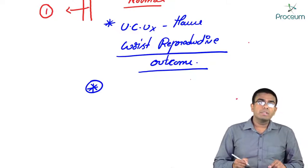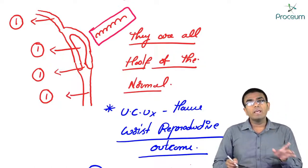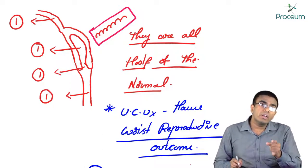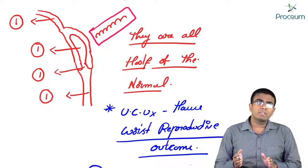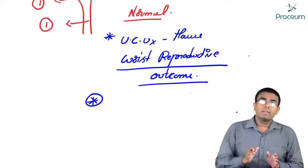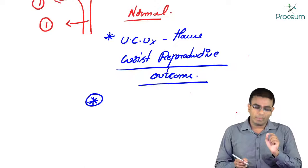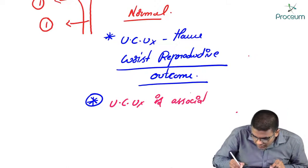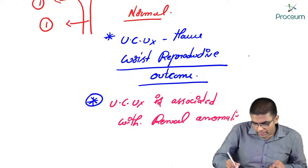The second important MCQ: in unicornuate uterus, one Mullerian duct is not developing. If one Mullerian duct is not developing, other structures in the embryo — such as the metanephros — may also not develop, leading to failure of development of other organ systems. So unicornuate uterus is usually associated with renal anomalies.